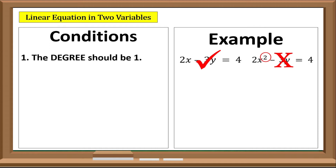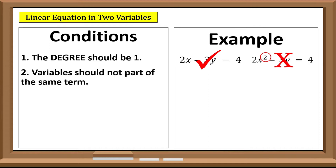Second, variables should not be part of the same term. For example, 2xy equals 4 is not a linear equation because x and y are in the same term.